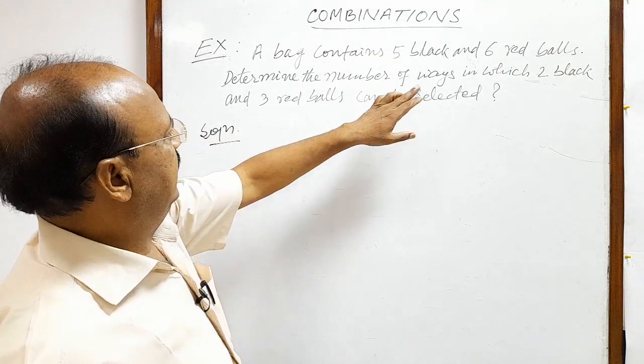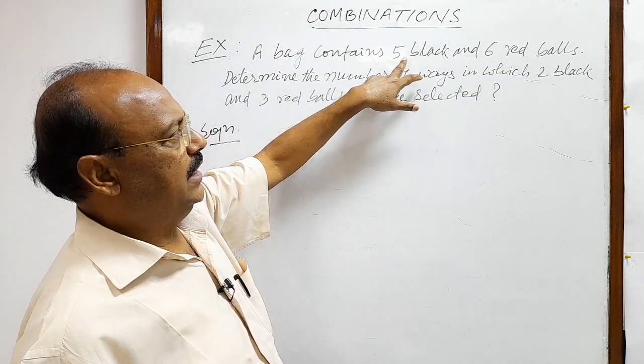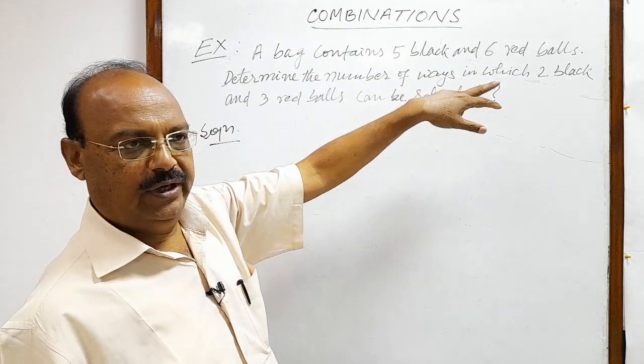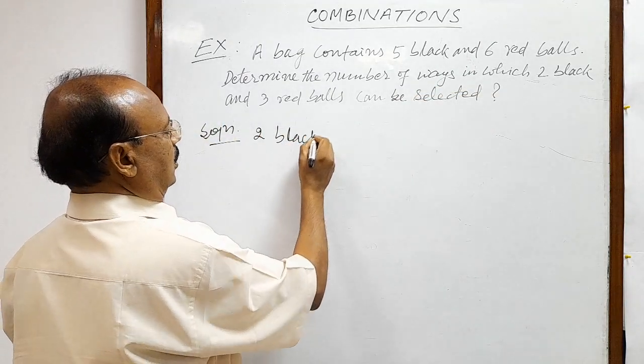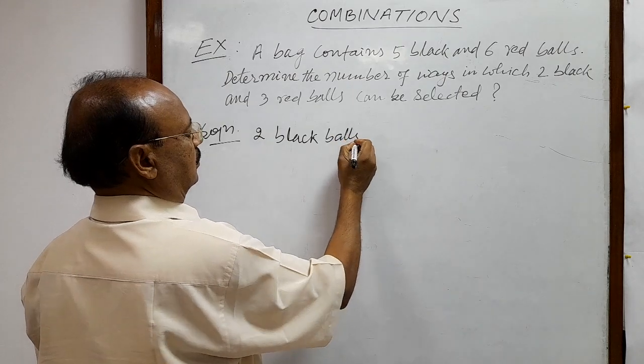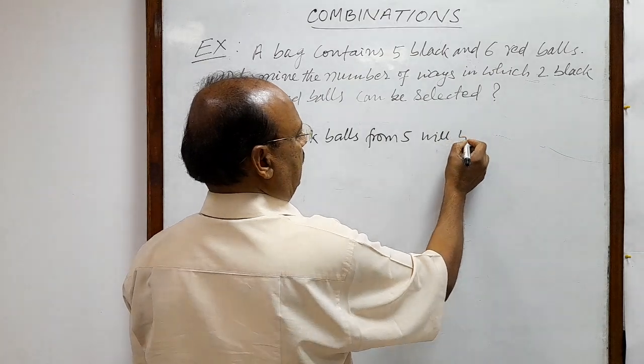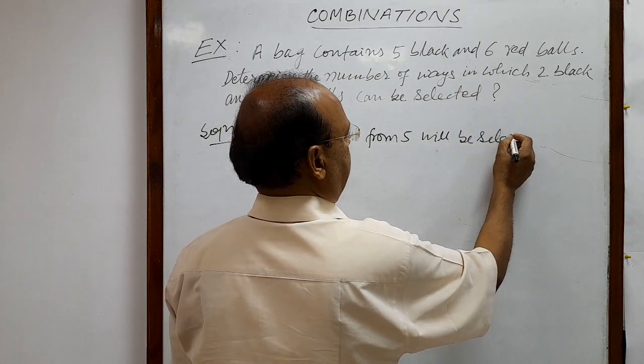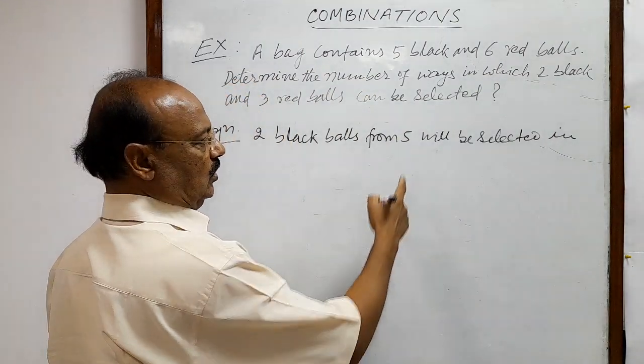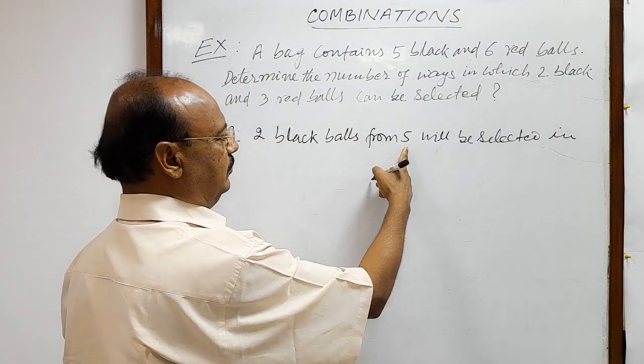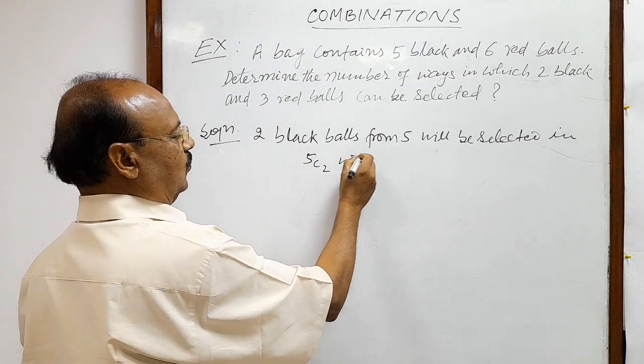Here we have to select two black balls from five black balls. So two black balls from five will be selected in how many ways? Number of objects given is five and we have to select two. So in 5C2 ways.